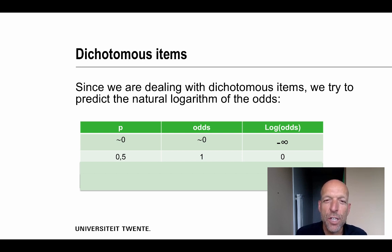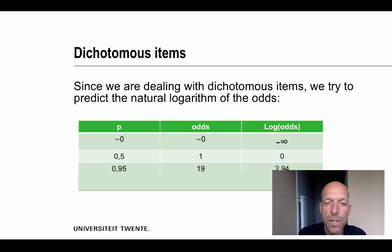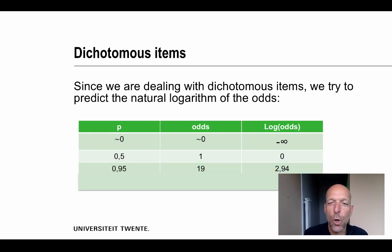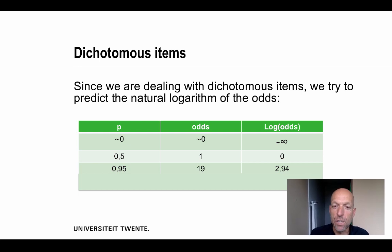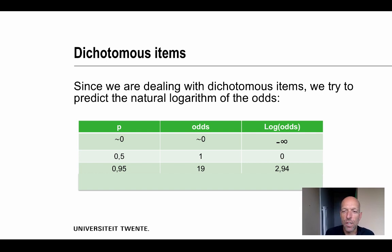Suppose that the question is answered correctly by 95% of the people. And only 5% answers the question incorrectly. Then the p-value is 0.95. The odds are 19, which is a huge number. And the log odds, so the natural logarithm of 19, is 2.94.